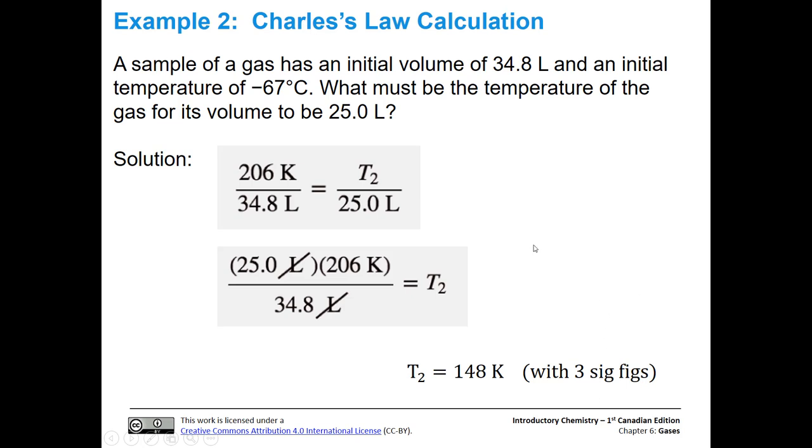And so again, three significant figures. Oh, interesting. A case here could even be made that maybe we should have only two significant figures in our T2. Let's go up here and take a look. We have a sample of gas, and its original temperature is negative 67 degrees C. That's only two significant figures. So what I would do probably is round this to 150 Kelvin for two significant figures.